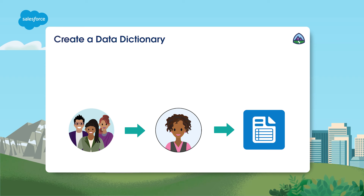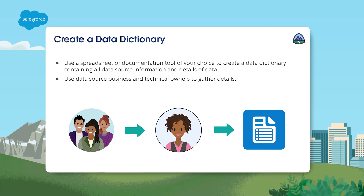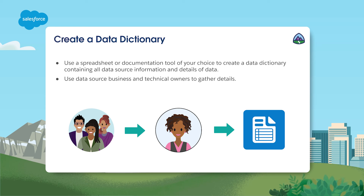Let's explore how to create a data dictionary. You'll probably use something like a spreadsheet or a documentation tool of your choice, containing all data source information and details of the data that you're working with. Engage the business and technical owners of data sources to gather such details. Capture data source information like system name, how to access data in that system, how much data to expect, and how often to expect it.